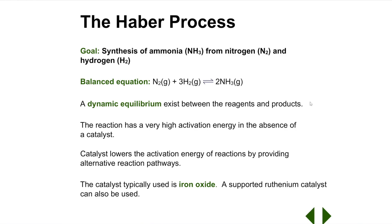The forward reaction in the Haber process has a high activation energy. Activation energy is the amount of energy needed to get a reaction started. This reaction has a high activation energy because nitrogen gas is inert — inert means that it is very unreactive. This is because the two nitrogen atoms making up the N2 molecule are very small and are held together by a strong triple covalent bond. Consequently, they are held together very tightly, and a lot of activation energy is needed to break them apart.